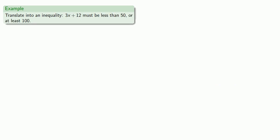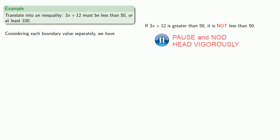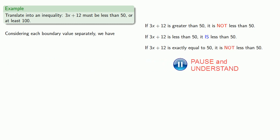So far we've dealt with simple expressions and single variables, but there's no reason we couldn't express an inequality as it relates to an algebraic expression. Let's translate into an inequality: 3x + 12 must be less than 50 or at least 100. The boundary values are 50 and 100. If 3x + 12 is greater than 50, then it's not less than 50. If 3x + 12 is less than 50, then it is less than 50. Remember to check boundary values — if 3x + 12 is exactly equal to 50, then it is not less than 50. So we want 3x + 12 to be strictly less than 50.